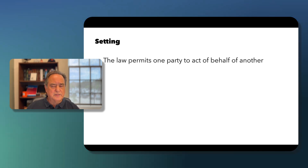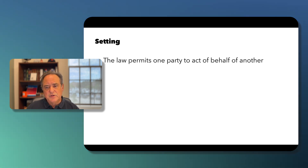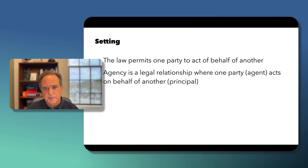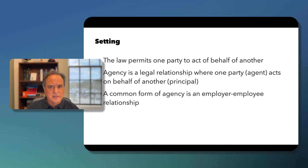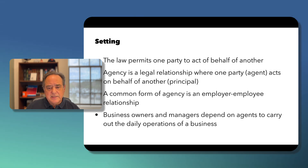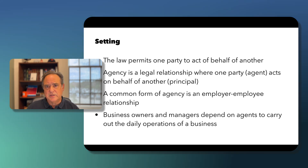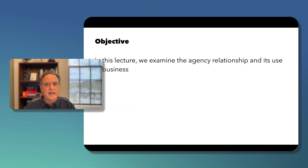Agency is a common law doctrine that says one party can act on behalf of another. It is a legal relationship where one party, the agent, acts on behalf of another who we call the principal. The most common form of agency is the employer-employee relationship. Business owners and managers depend on agents to carry out daily operations, and many businesses could not operate without them. In this lecture we'll look at the agency relationship and how it's used in business.